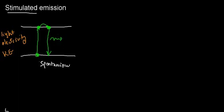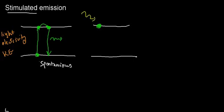But what may also happen is that I have a molecule with an electron already excited — it has the potential to drop down and emit a photon. What I can do is stimulate that electron to drop down and emit that photon by using another photon. That photon comes through, interacts with the electron — you can think of it as nudging it — and the electron drops down and emits a photon. This is what we mean by stimulated emission.